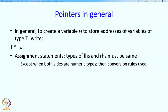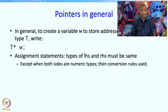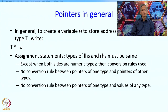This type-matching rule is not quite applicable if both sides have numeric types — you can take a float value and store it into an int, or vice versa. But that is an exception made for numeric types. If both sides are not numeric, there is no automatic conversion from one type to another, and the compiler will flag an error. There is no conversion rule between pointers of one type and values of another type, or between pointers of different types.